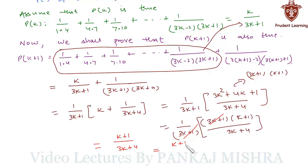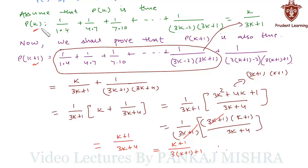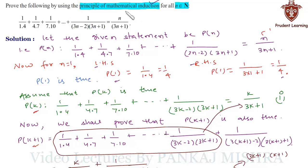We can write (k+1)/(3k+4) as (k+1)/(3(k+1)+1), which is exactly the form of P(k+1). Therefore this condition is true for n=k+1, so P(k+1) is true whenever P(k) is true. Hence, by the principle of mathematical induction, the statement P(n) is true for all natural numbers n.